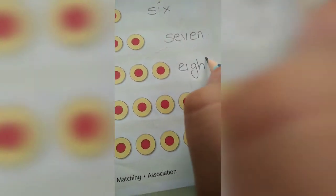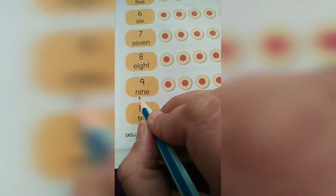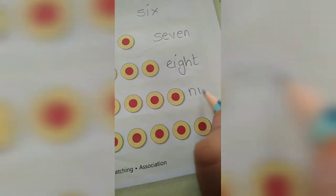E, I, G, H, T, 8. E, I, G, H, T, 8. N, I, N, E, 9. N, I, N, E, 9. Or T, E, N, 10. Then you have to learn these numbers.